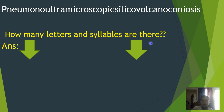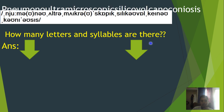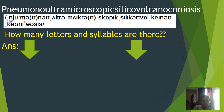In the word pneumonoultramicroscopicsilicovolcanoconiosis, if we see the phonemic transcription of this word, then you can see there are six secondary stresses and two primary stresses. You have to keep in mind that secondary stress is less important than primary stress, because primary stress is very important. You can write this phonemic transcription — it will help you to pronounce the word correctly.